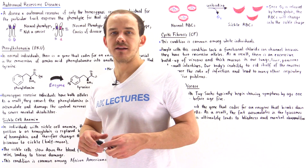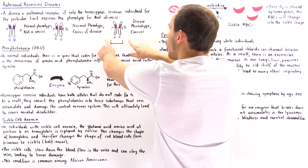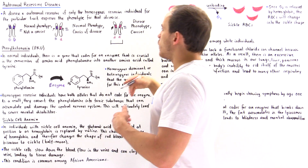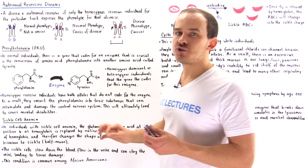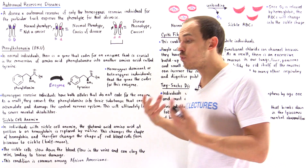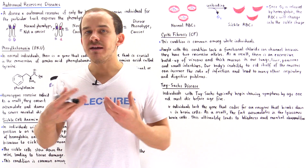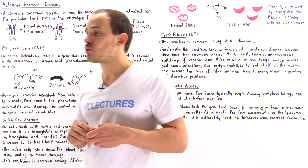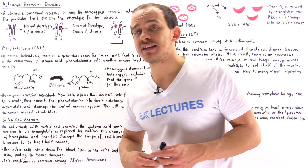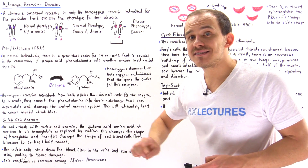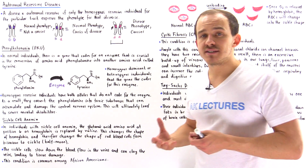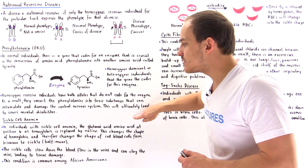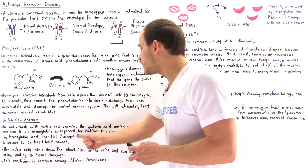Now let's move on to sickle cell anemia. In sickle cell anemia, the individual is once again homozygous recessive, and they basically have a non-functional gene — the gene codes for a protein that is not fully functional. This protein is hemoglobin. Normally, hemoglobin binds oxygen in the lungs and unloads that oxygen in the tissues of our body, then returns to the lungs to pick up more oxygen. In individuals with sickle cell anemia, the glutamic acid at amino acid position number six on the beta subunit of hemoglobin — remember, hemoglobin consists of two alpha units and two beta units — is replaced by valine.